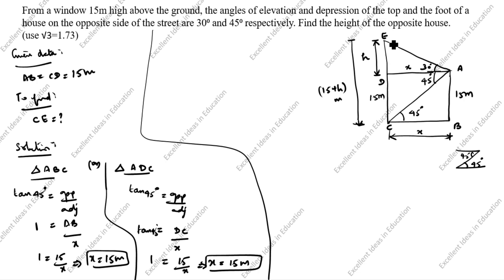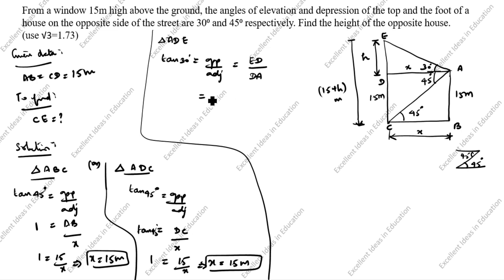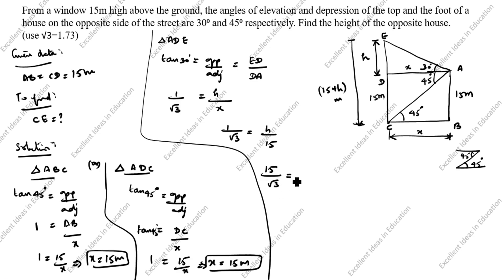Next we take triangle ADE. Tan 30 = opposite / adjacent = ED / DA. ED is h and DA is x, which we now know is 15. Tan 30 is 1/√3, so 1/√3 = h/15, which gives h = 15/√3.